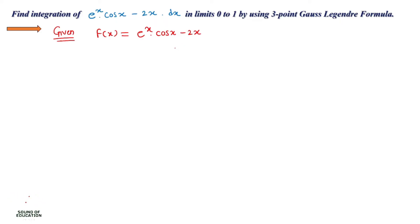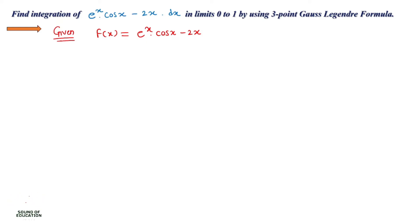An important note: whenever there is a trigonometric term given in the numerical, you must always convert your calculator to radian mode while doing calculations. Since we have a cosine term here, convert your calculator to radian mode. This is very important — in examinations, students solve the entire numerical correctly but forget to switch the calculator to radian mode, which causes all calculations to go wrong.